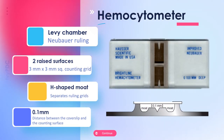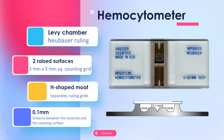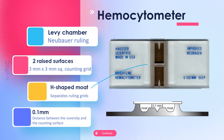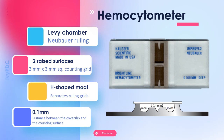The manual cell count uses a hemocytometer or a counting chamber. The most common one is the Levy chamber that uses an improved Neubauer ruling. It is composed of two raised surfaces, each with a 3 mm by 3 mm square counting area — chamber one and chamber two. These two raised surfaces are separated by an H-shaped mold. At a side view, the distance between the cover slip and the hemocytometer is 0.1 mm, which will be important in the computations.